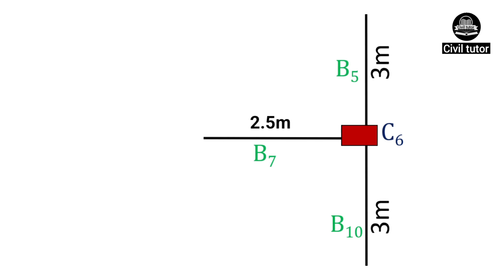The column 6 is connected by the beams B5, B7, and B10. Since B5 and B10 have the same span, i.e. 3m, the net moment created by these two spans will be 0. Therefore, the major axes of bending will be along the span of the beam B7, and the depth of C6 is to be kept perpendicular to the span B7.